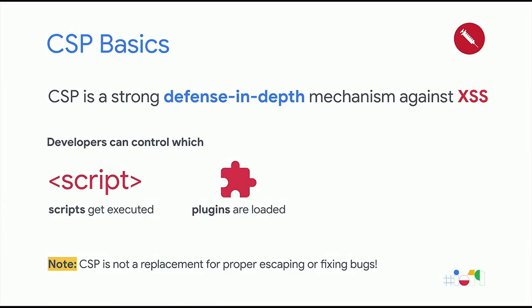Content security policy, also called CSP, allows a developer to very fine-grained specify which scripts are allowed to execute on your site, and also which plugins can be loaded. One thing I really want to stress here is that content security policy is a defense-in-depth mechanism — a safety net in case any other primary security features in your application go wrong. Even if you do escaping or have a very hardened application, a bug can slip through, and then it's great if you have a CSP that can protect your users from the consequences of an XSS vulnerability.